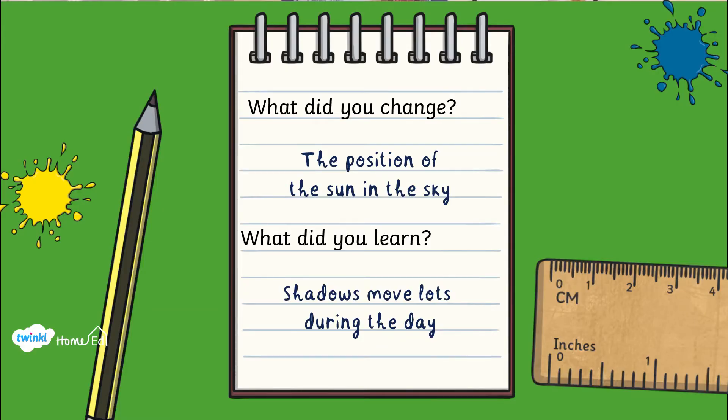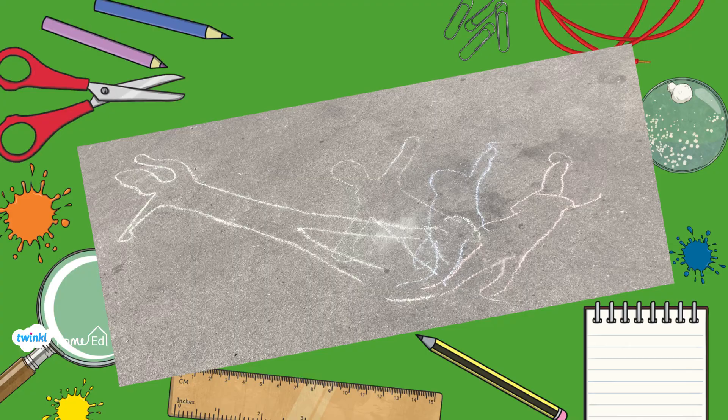When we were playing with this science experiment, we changed where the sun was in the sky and we learned your shadow moves all the way around. We love the picture we made—it almost looks like someone's dancing by the end of the day.